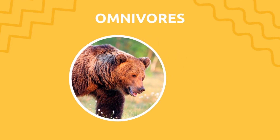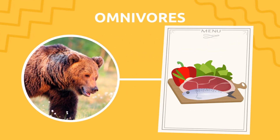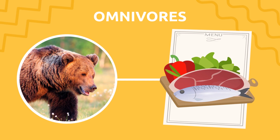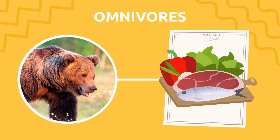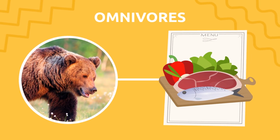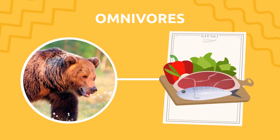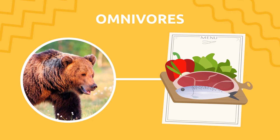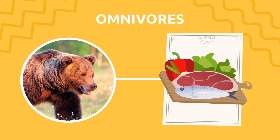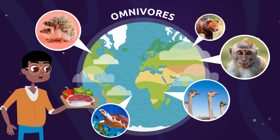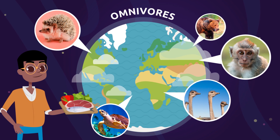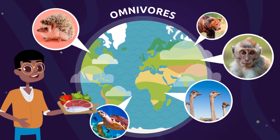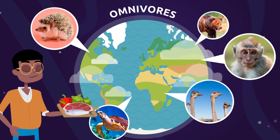Zebras and deer are herbivores. Look at this zebra — it's eating grass in the savannah! Omnivores eat a huge variety of foods: they eat meat, vegetables, and plants. This means they are both carnivores and herbivores.